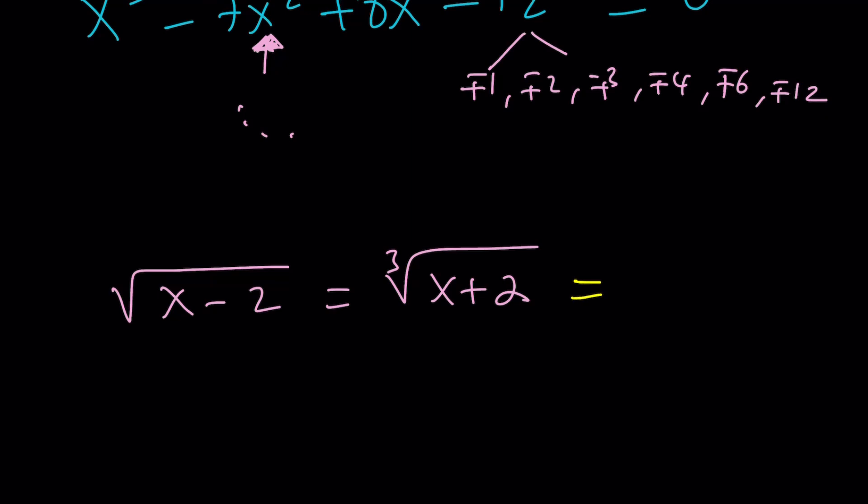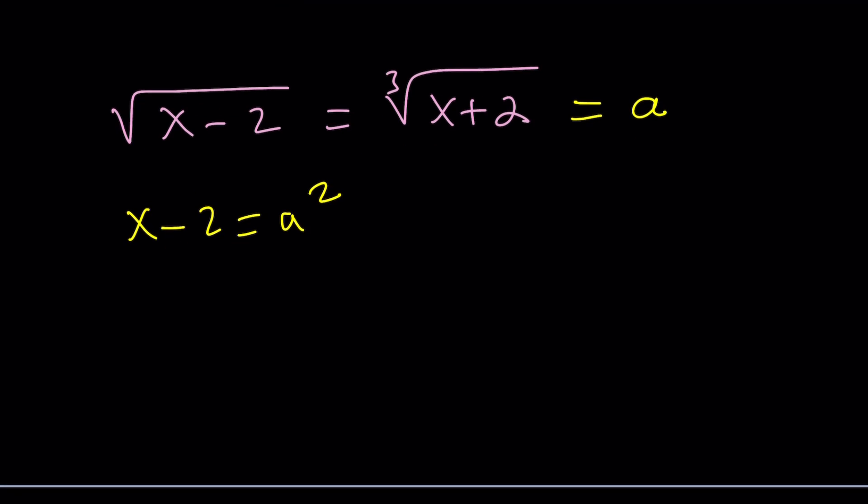So I want to go ahead and actually set these equal to something. How about a? So from here, we get the following. Since the square root of x minus 2 is equal to a, that would give me x minus 2 equals a squared. And then the second one is going to give me x plus 2 equals a cubed.